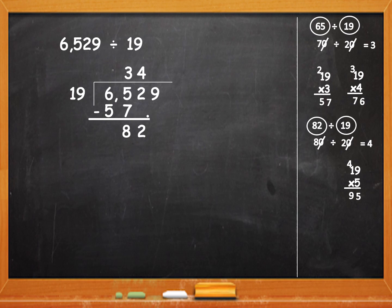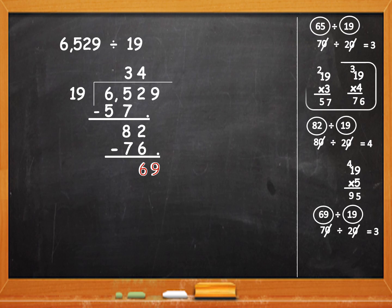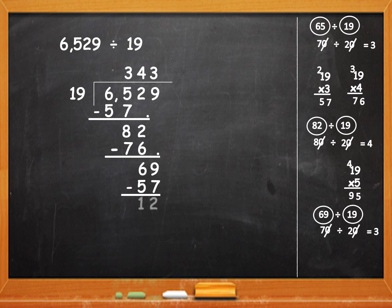It is 19 into 4. Write 4 in the quotient. 19 fours are 76. When you subtract, the remainder is 6 and bring down 9. Next, divide 69 by 19. Round off 19 to 20 and 69 to 70. Cancel the zeros — 2 will go 3 times. 19 threes are 57 and 19 fours are 76. 76 is more than 69, so it is 19 threes are 57. When you subtract, the remainder is 12. There are no more digits left. Quotient is 343 and remainder is 12.